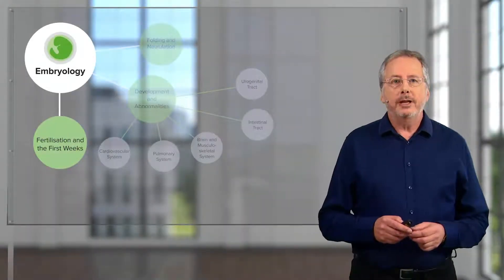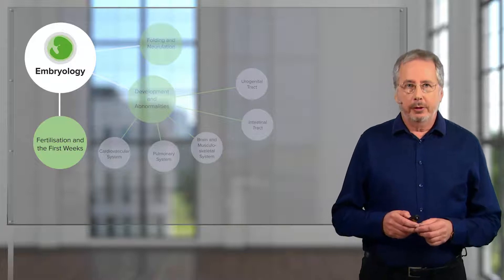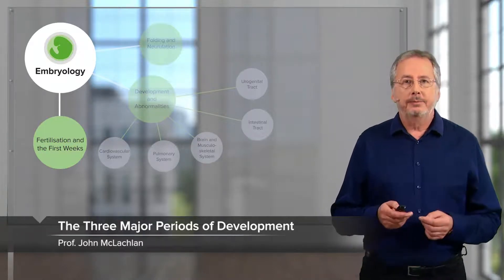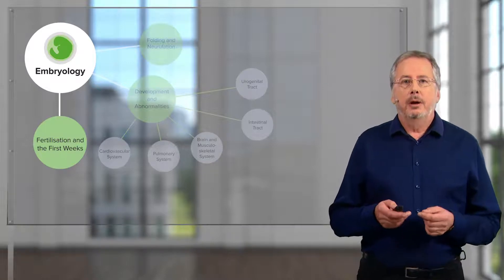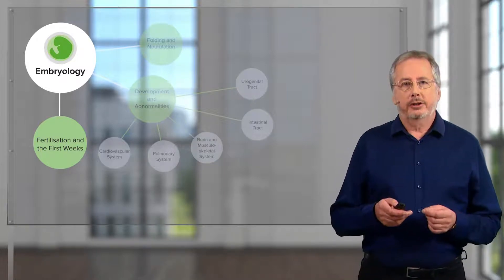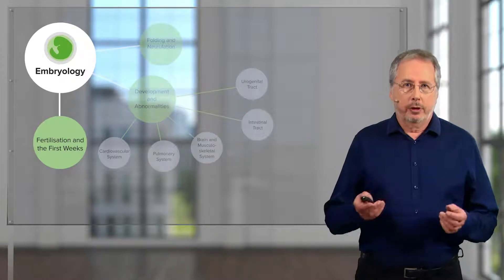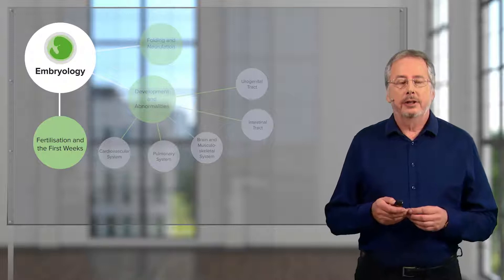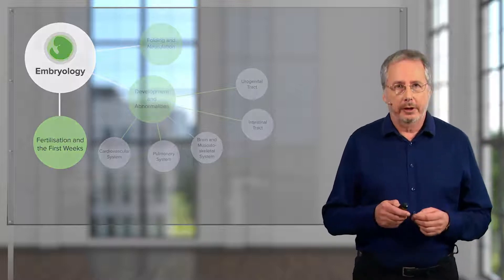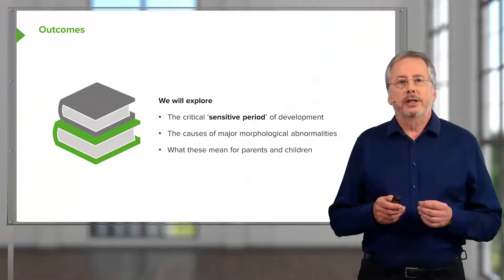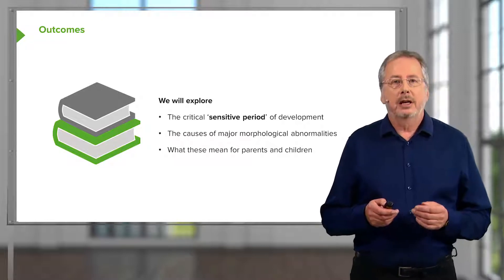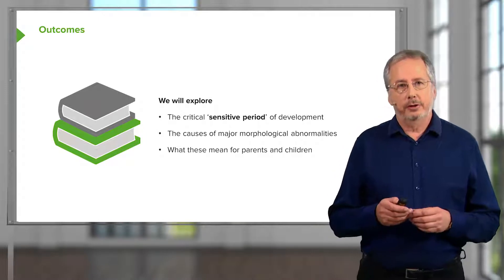Hello, and welcome to this lecture on the three major stages of development, focusing on the embryonic period from the third week to the eighth week after fertilization. This is the sensitive period when major morphological abnormalities develop — that's major abnormalities affecting body systems such as the limbs, the skull, the brain, and so on. Because of this, it's also emotionally challenging and a disturbing subject, and we have to be aware of that for ourselves and for others. In the lecture, we'll explore this critical sensitive period, and then look at the causes of some major morphological abnormalities and the implications for parents and children.